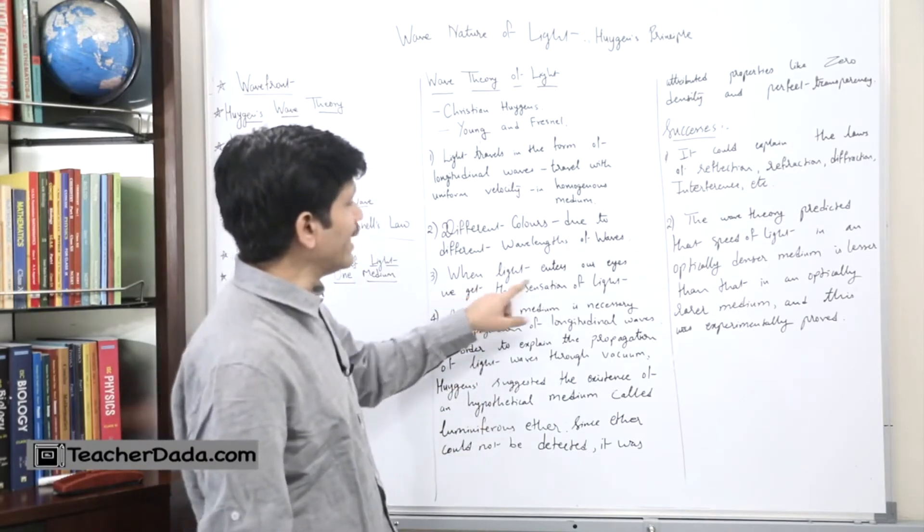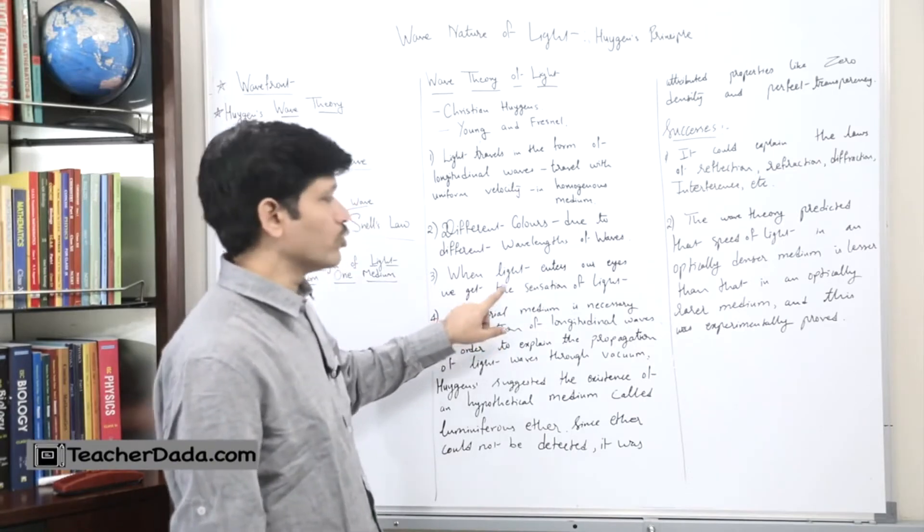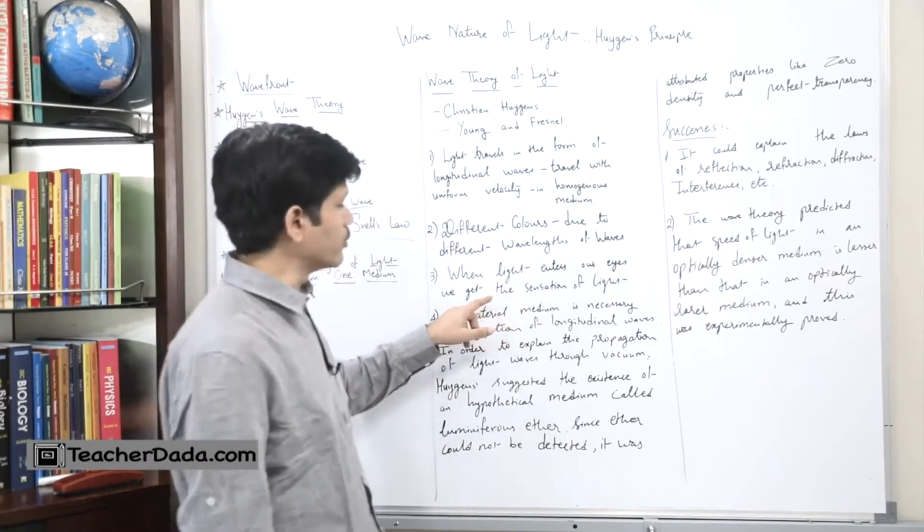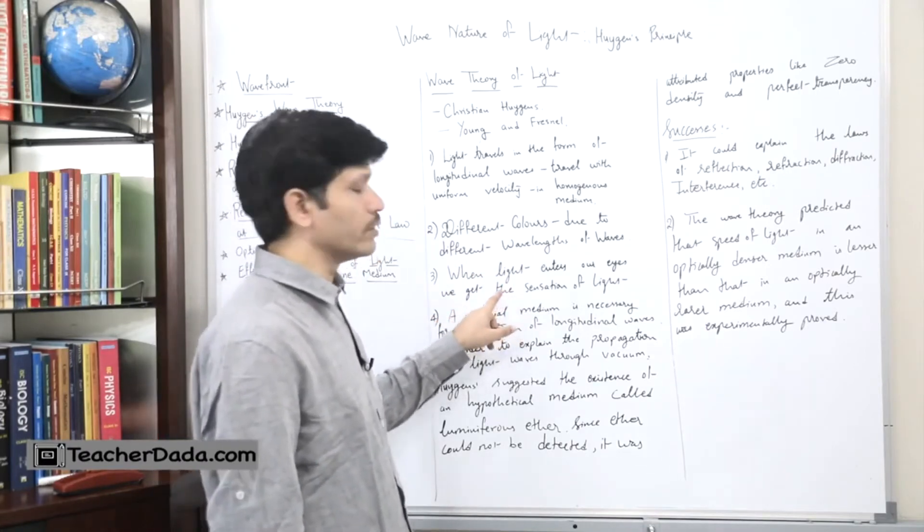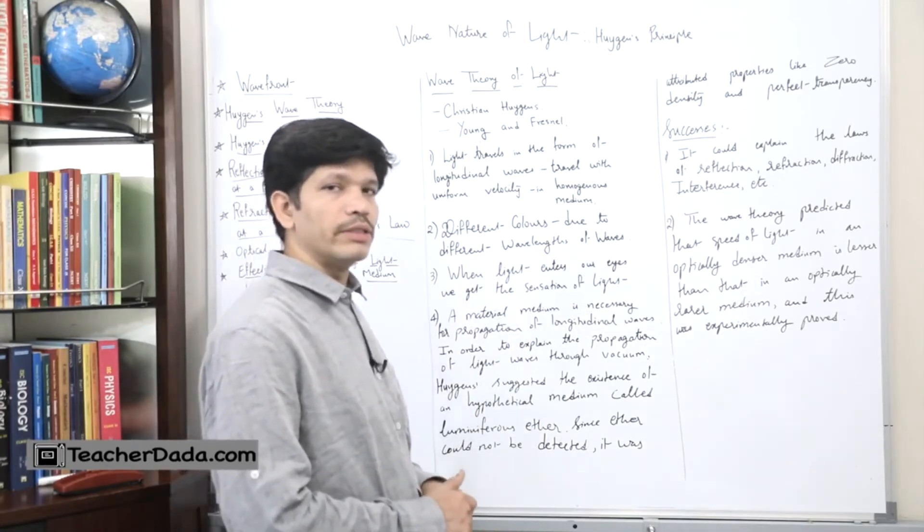Third, when light enters our eyes, we get the sensation of light. This was also said by Newton in his corpuscular theory. He said that when corpuscles reach the retina, we get the sensation of light.